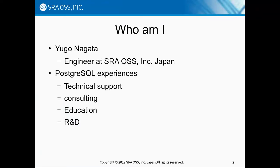My name is Yugo Nagata. I'm an engineer at SRAOSS in Japan. I have experience in technical support, consulting, and some education about Postgres internal architecture. Currently, I am in charge of the R&D section, and especially I am working on incremental view maintenance, today's topic.